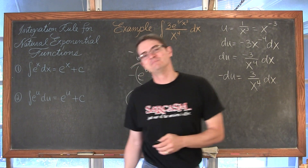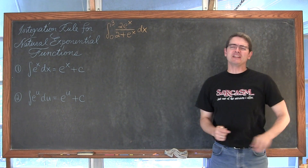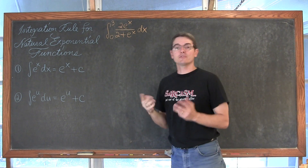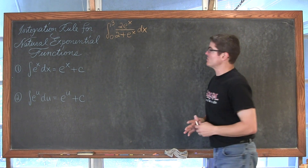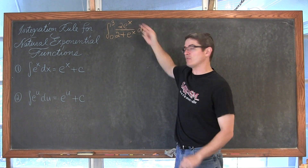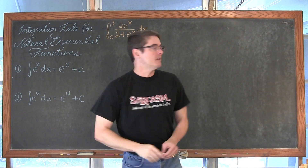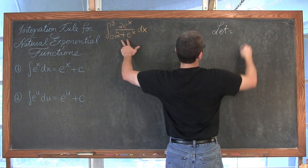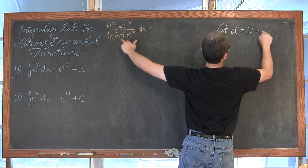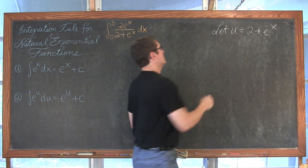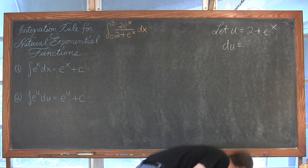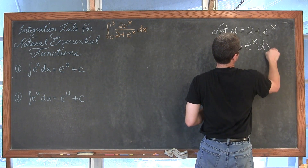Our third example is a definite integral: the definite integral from 0 to 3 of 2 times e to the x over 2 plus e to the x dx. For u-substitution, the numerator has just e to the x which is very basic, so I am going to focus on the denominator. Let u equal 2 plus e to the x. Then du is going to equal e to the x dx, since the derivative of a constant is zero.